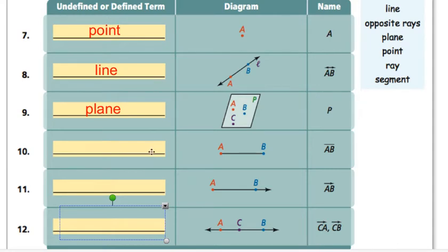The third one is a representation of a plane, and we label planes by single letters, single capital letters. The next one, when there's two solid dots on each end, that one is a segment.